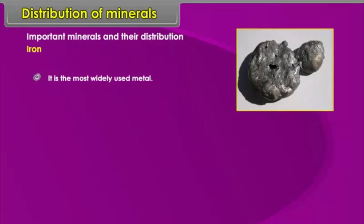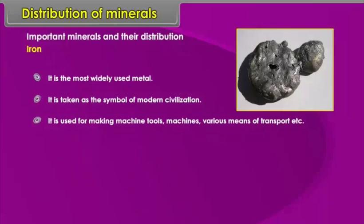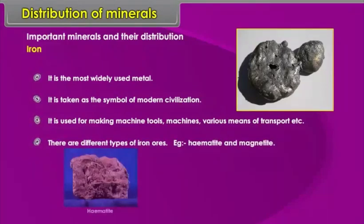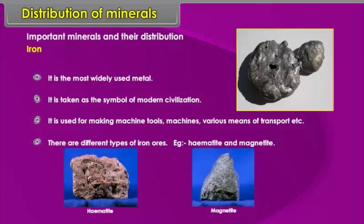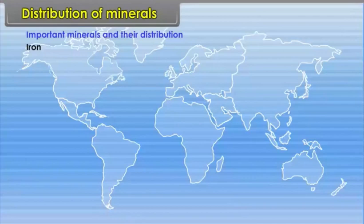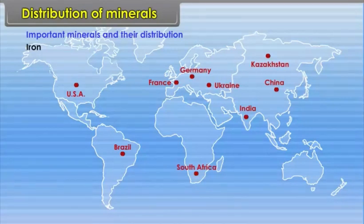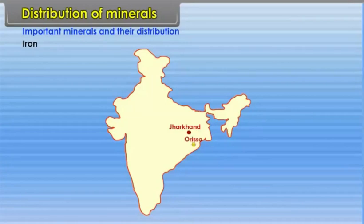Iron is the most widely used metal and is considered the symbol of modern civilization. It is used for making machine tools, machines, and various means of transport. Types of iron ore include hematite and magnetite. Iron ore is found in Ukraine, Kazakhstan, USA, China, India, Brazil, France, Germany and South Africa. In India, it is found in Jharkhand, Orissa, Chhattisgarh and Madhya Pradesh. Copper is used largely in electrical industries because of its electrical conductivity. It is found in Chile, USA, Canada, Poland, Russia, Georgia, Armenia, Congo and Zambia. In India, copper is found in Jharkhand and Rajasthan.